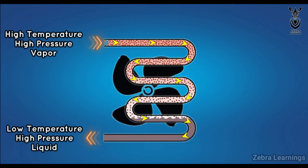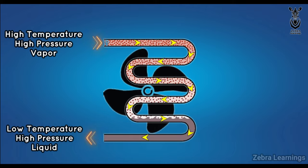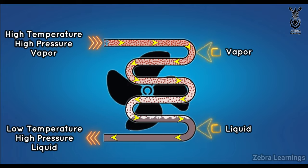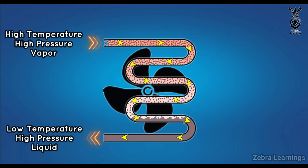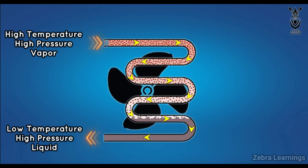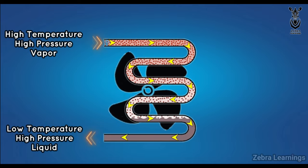As the heat in the refrigerant is released, the refrigerant changes from vapor state to liquid state. It now comes out of the condenser at high pressure, low temperature, and in liquid form.